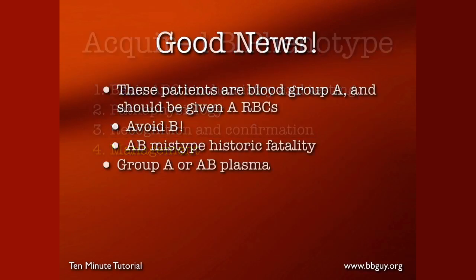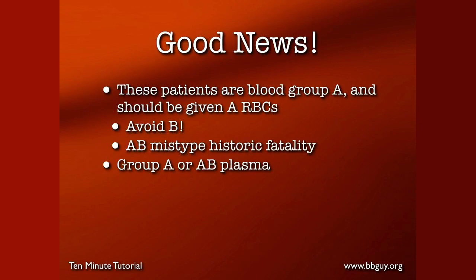Finally, let's finish with the management of acquired B. It's not really very hard. These patients are blood group A, and so they should get blood group A red cells. Bottom line: avoid group B cells. The ES4 clone caused some significant problems in the past — a patient reported in the 90s by Dr. Garrity's group was mistyped as AB, and after the third or fourth transfusion of AB blood had a fatal acute hemolytic transfusion reaction because the person really was blood group A. With plasma, you could certainly give someone with acquired B AB plasma, or group A plasma as well, without significant consequences. Acquired B is really most likely more of a laboratory phenomenon, but we've changed our testing so much that it rarely causes a problem in real life.